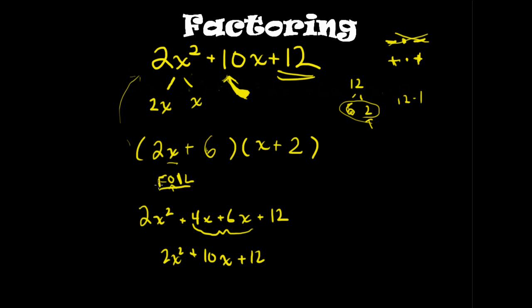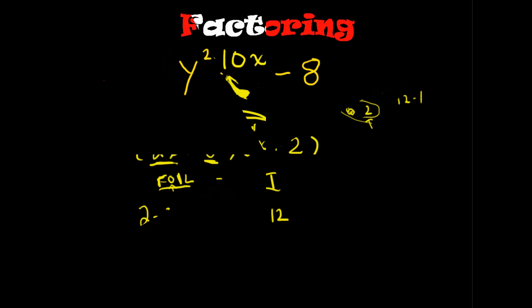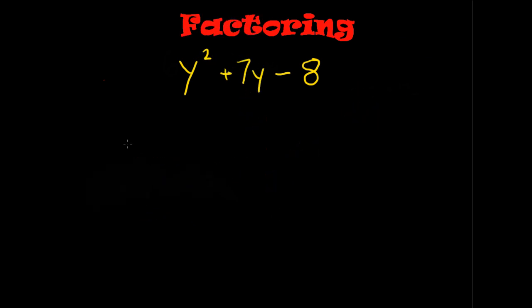So, FOIL is not any different than what we have been doing, because we've been taking this first term and distributing it through the first term on the other side, and the second term. Well, that's the same thing as first, outside, and then we took the 6 and distributed it inside, and then last. So, you're already using FOIL, but if it helps you remember, then you can think of that part of the distributive property as FOIL.